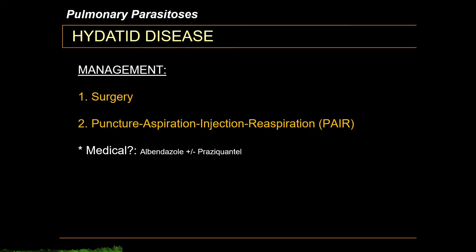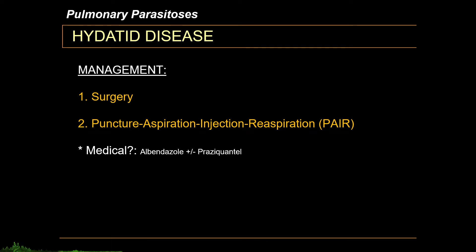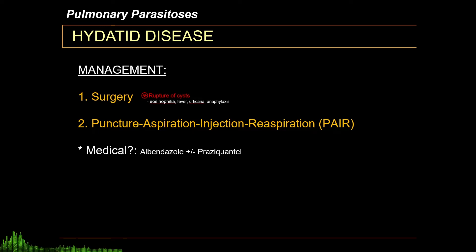The management of hydatid disease is primarily surgery, involving excision of cysts. Antiparasitic drugs such as albendazole and/or praziquantel may be given after to prevent recurrence. PAIR is a special technique standing for puncture, aspiration, injection, and reaspiration. It is a percutaneous management wherein a needle is used to puncture the cysts, the contents are aspirated, antiparasitic drugs are injected to kill the scolex, and the cystic debris and drugs are reaspirated. Using this technique, you don't need to cut out the endocysts. In either intervention, you have to be worried about cyst rupture to prevent anaphylactic shock.